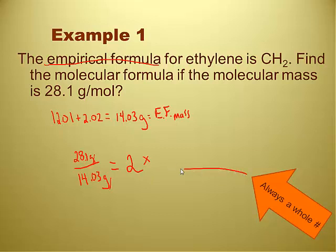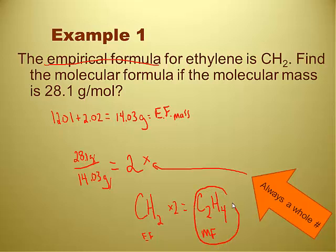And that's why it says always a whole number here. This is always a whole number. What that means is that CH2, we have to multiply everything by two. That's the empirical formula. The molecular formula, after I multiply things by two, is going to be C2H4. And this is my molecular formula, which is the actual formula of the compound. That's the actual formula, the real formula.